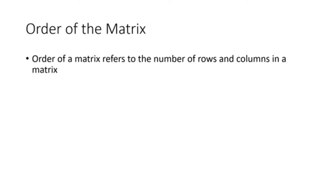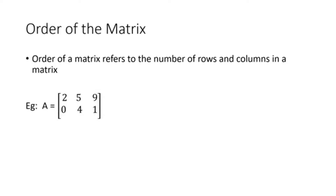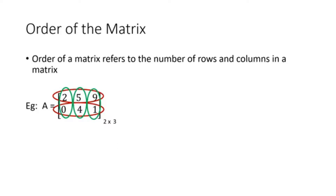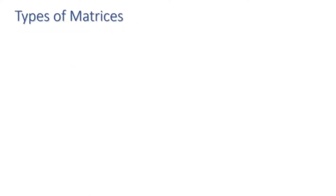The order of a matrix refers to the number of rows and columns in the matrix. If you take this example, matrix A has two rows and three columns, so we write it as two into three. This is the order of the matrix — we either write it as two into three or say this is a two by three matrix.